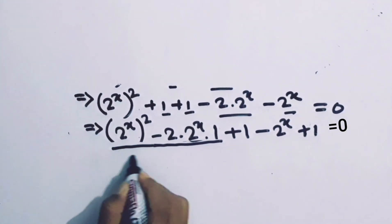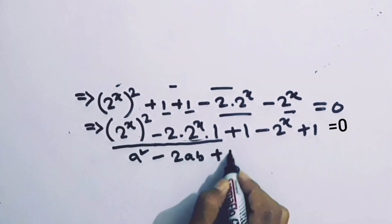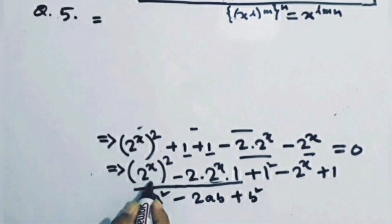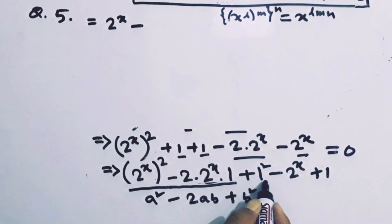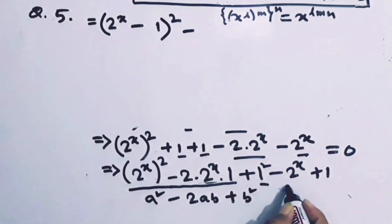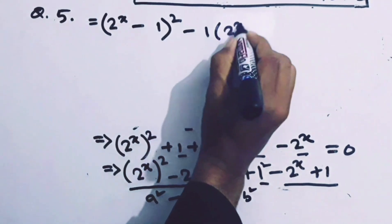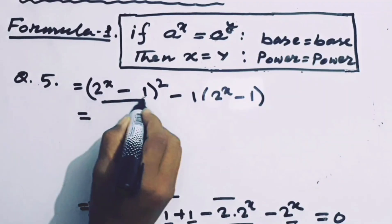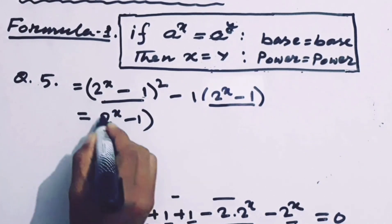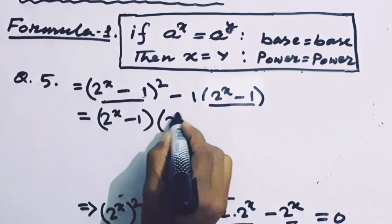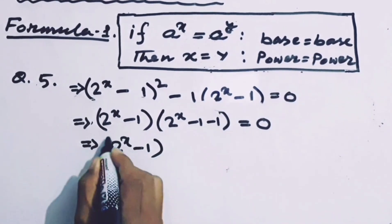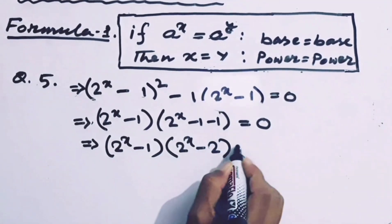Here we have three terms, all in the formula: a squared minus 2ab plus b squared, that is (a minus b) whole squared. Here a equals 2ˣ and b equals 1, so this is (2ˣ minus 1) whole squared, minus 1. Taking (2ˣ minus 1) as common in both terms, we write (2ˣ minus 1) into (2ˣ minus 1 minus 1) equals 0, which implies (2ˣ minus 1) times (2ˣ minus 2) equals 0.